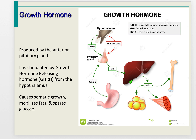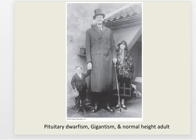Growth hormone is produced by the anterior pituitary gland and is stimulated by growth hormone-releasing hormone from the hypothalamus. It causes somatic growth, mobilizes fat, and spares glucose. Too much growth hormone leads to gigantism, often caused by a pituitary tumor; too little causes pituitary dwarfism, where the pituitary does not secrete enough growth hormone.